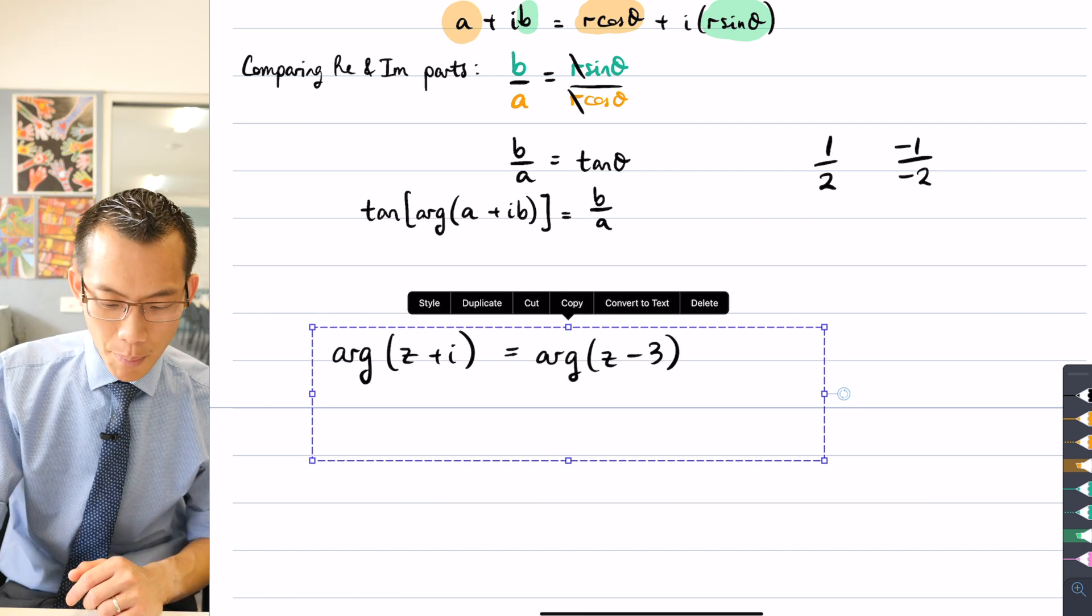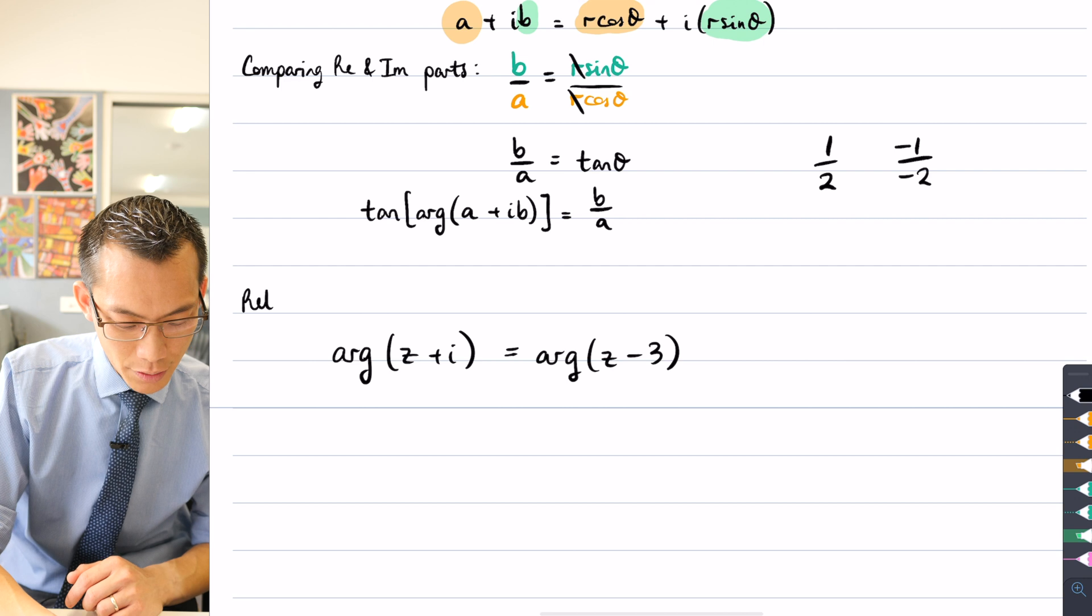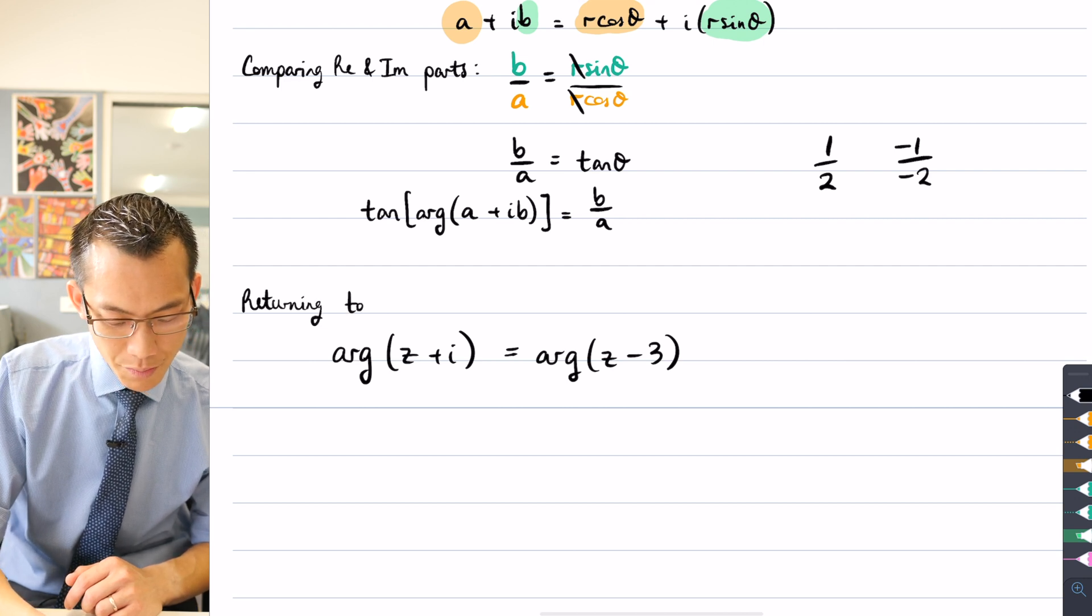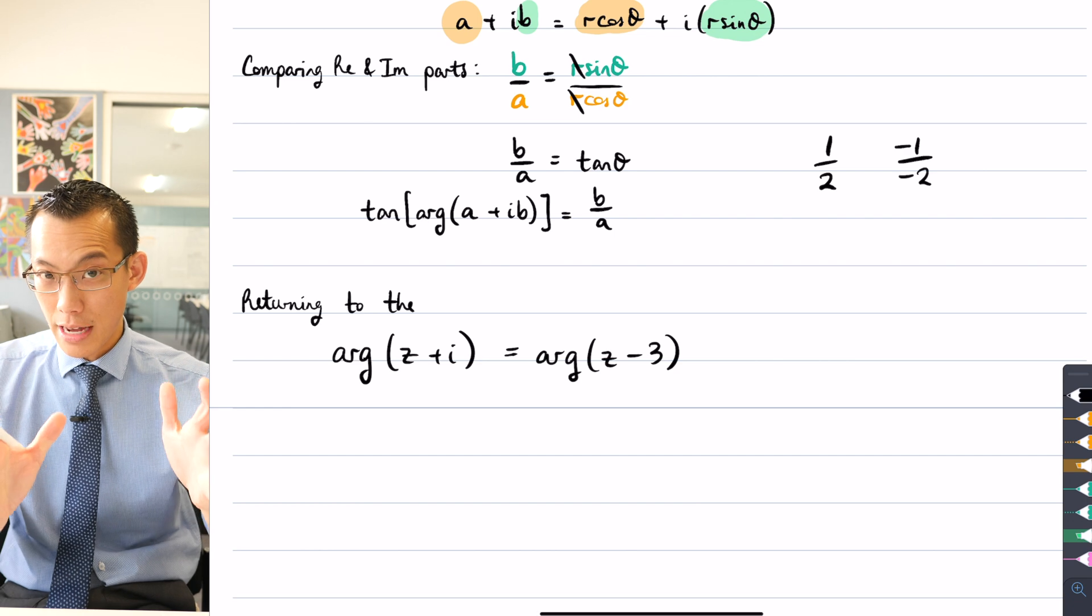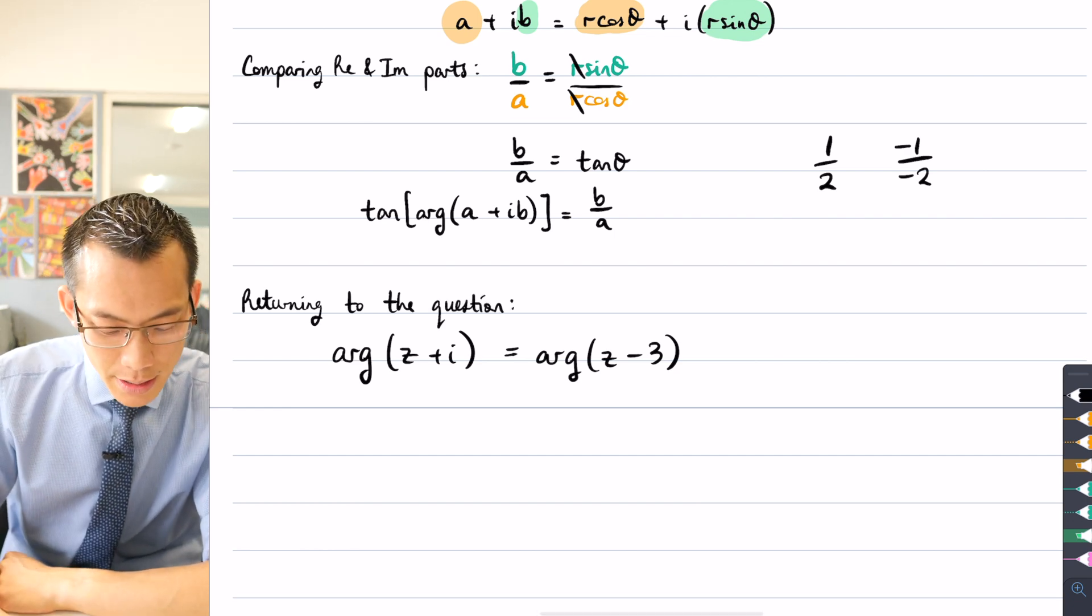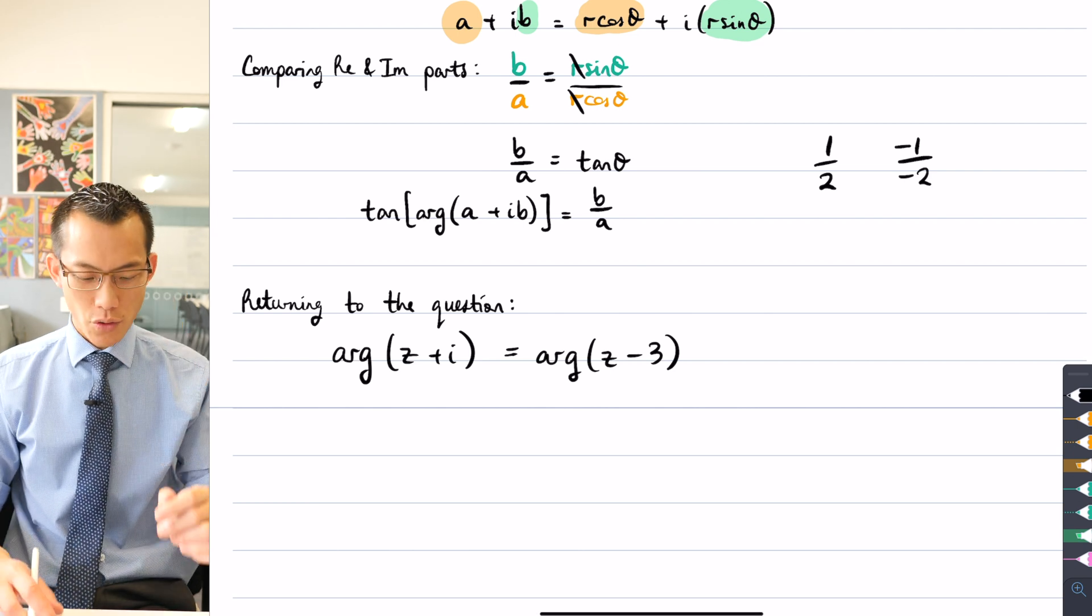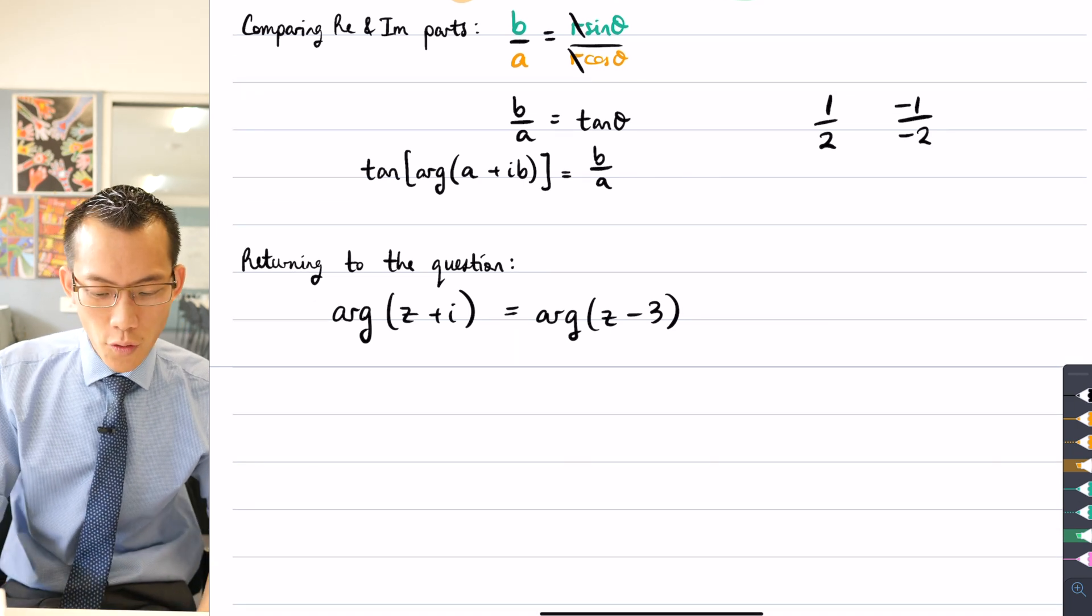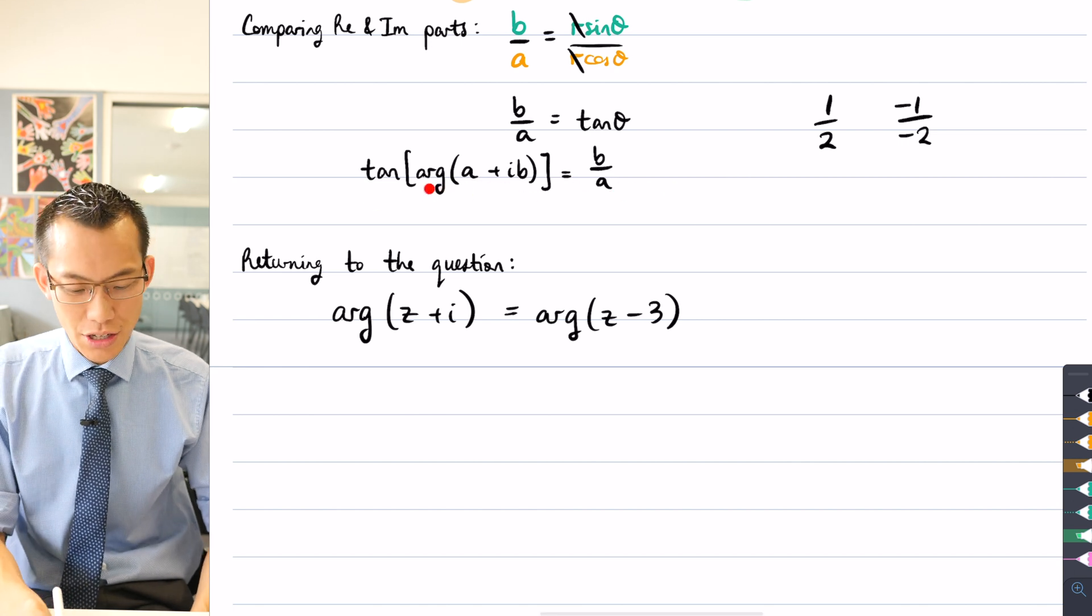So I'm going to say, return to the question, because I've now established that foundational knowledge which I mentioned we're going to need. This is the equation that represents the set of points that I'm after. So how do I get this into a form so that I can use this knowledge here?